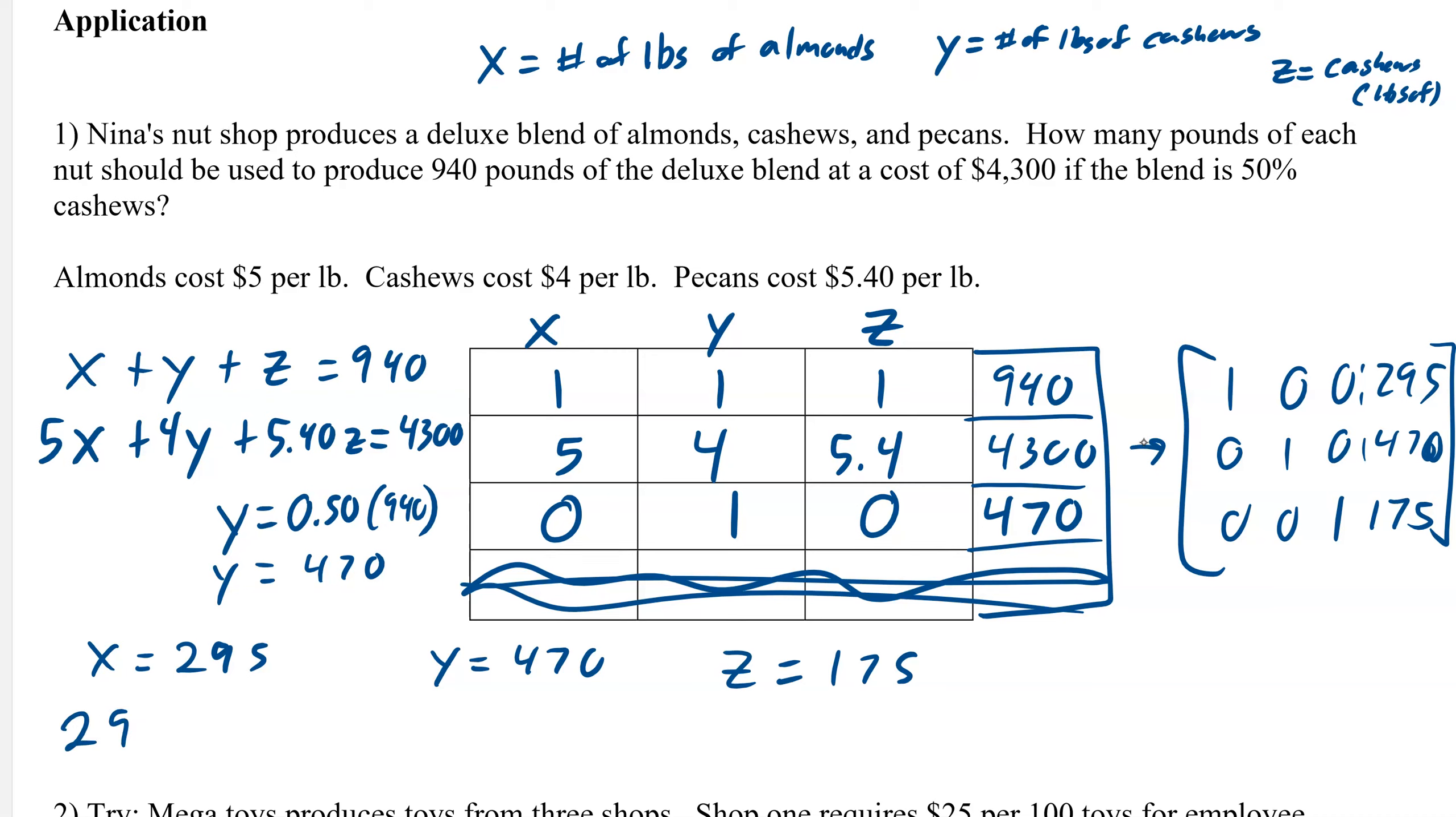So we would have 295 pounds of almonds, 470 pounds of cashews, and 175 pounds of pecans. So you just need to make your three equations, plug them in, and work that out. Let's try one more.